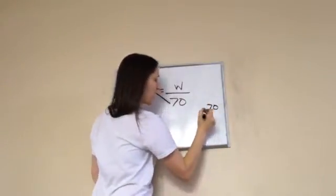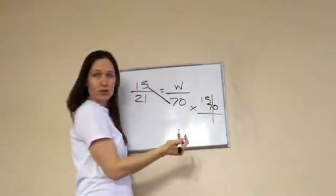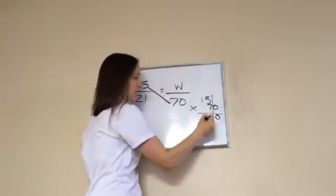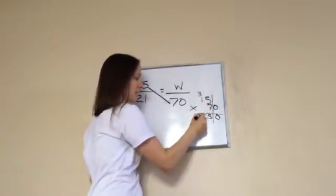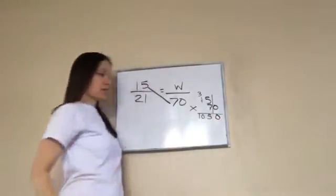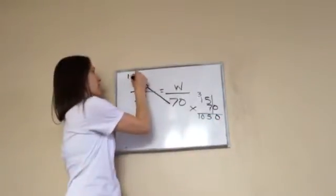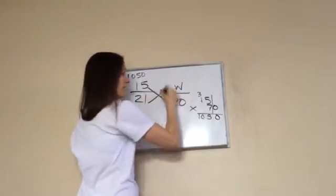70 times 15. I'm going to put my 0 on the outside. Remember that rule? You don't have to do that. You can just multiply. 7 times 5 is 35. 7 times 1 is 7, 8, 9, 10. So take off this. 1050. Holy cow, that's a big number. That's the answer to 70 times 15. So now, what's this have to equal?